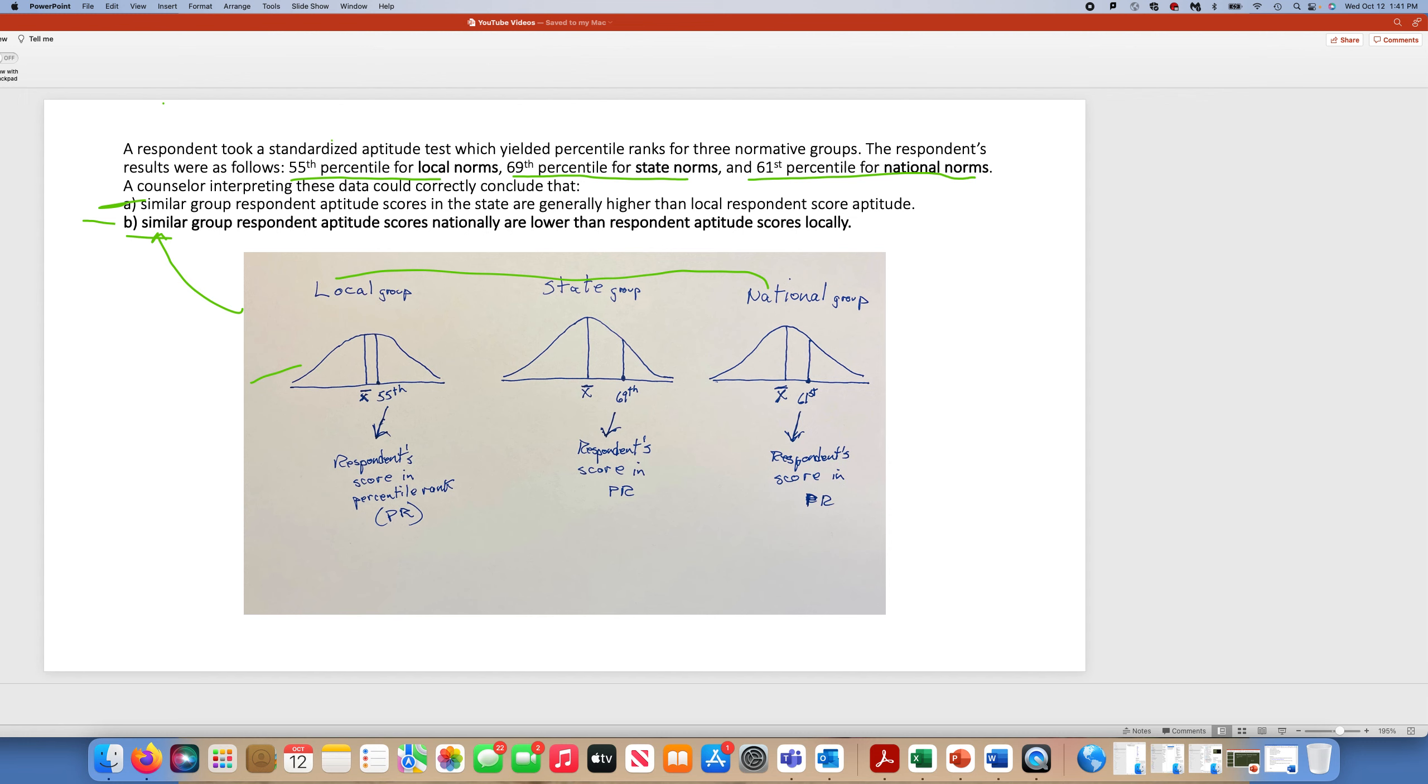A respondent took a standardized aptitude test. It's easier for me to change this language to say a student took a standardized aptitude test, which yielded percentile ranks for three normative groups. So essentially, their score on that one aptitude test that they took is being compared to three normative samples.